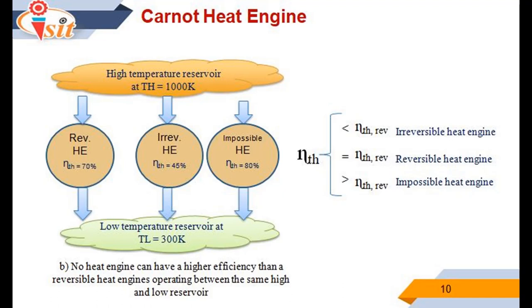Compared with this value, the actual efficiency of 40% does not seem so bad, even though there is still plenty of room for improvement. It is obvious from the equation thermal efficiency = 1 − TL/TH that the efficiency of the Carnot heat engine increases as TH is increased or TL is decreased. As TL approaches zero, the Carnot efficiency approaches unity. The thermal efficiency of actual heat engines can be maximized by supplying heat at the highest possible temperature and rejecting heat at the lowest possible temperature — limited by the temperature of the cooling medium such as rivers, lakes, or the atmosphere.